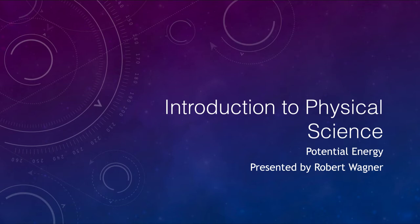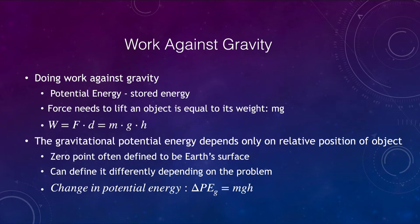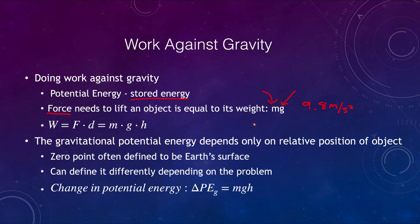Let's get started. When we look at doing work against gravity, that is a way of storing energy. There is a force needed to lift an object, and that is equal to its weight. The weight of an object is the mass times the gravitational acceleration — 9.8 meters per second squared on the surface of Earth. It would be different on another object: the weight would change, although the mass would not.